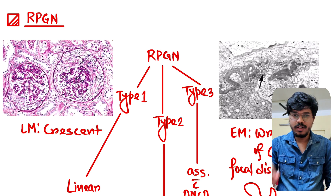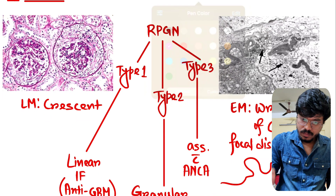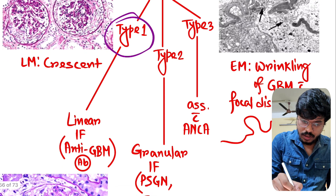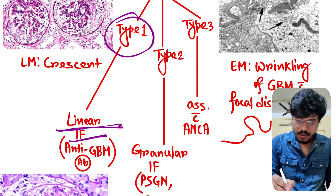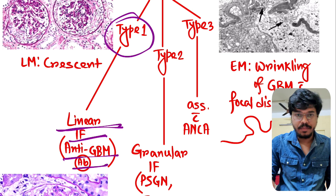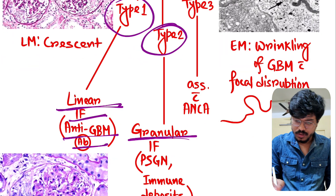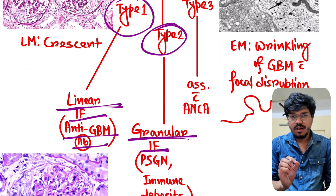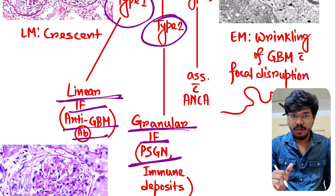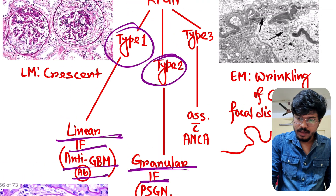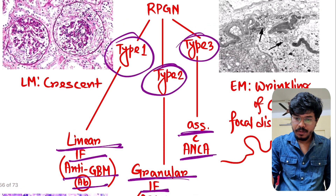There are three types of RPGN. Type 1 RPGN is also called the linear immunofluorescence type; the example is anti-GBM antibody disease, meaning Goodpasture syndrome. Type 2 RPGN shows granular deposits on immunofluorescence; the example is PSGN — post-streptococcal glomerulonephritis. Type 3 RPGN is associated with ANCA and is the pauci-immune type.